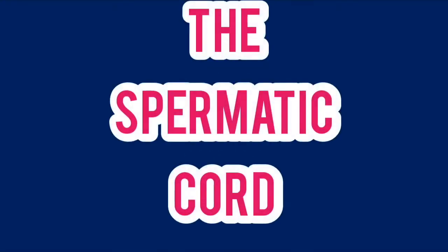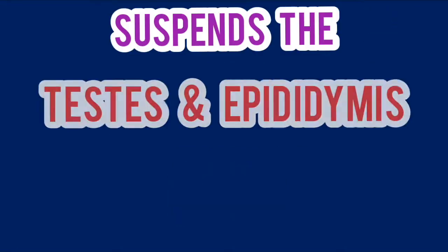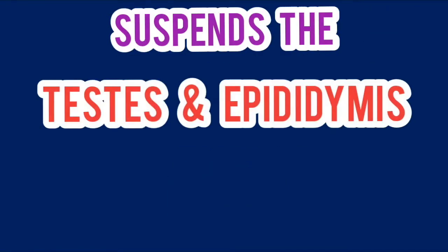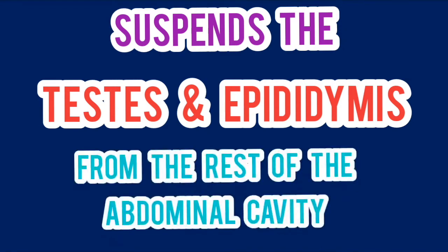The spermatic cord is a structure that is only found in males. It is a structure that suspends the testes and epididymis from the rest of the abdominal cavity. Let's quickly review the anatomy of the spermatic cord.